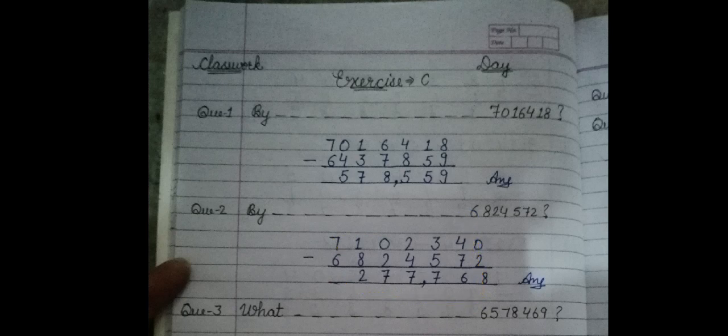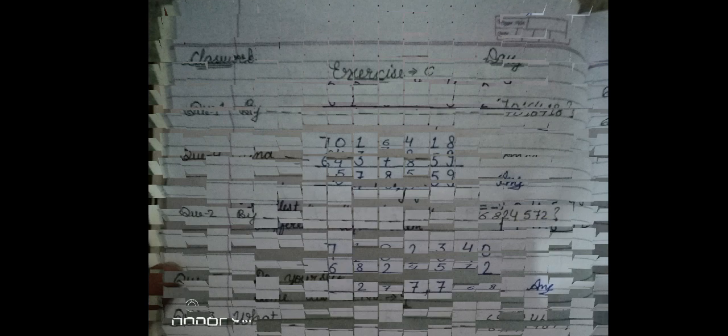So what is the meaning? By how much does this number exceed this number? This number that is given, how much bigger is it than the first number? What does this number mean? This 71,02,340 is how much bigger than 68,24,572? So how can you do this question? You will have to minus these two terms, you will get your answer.